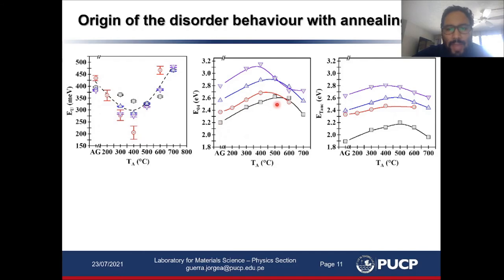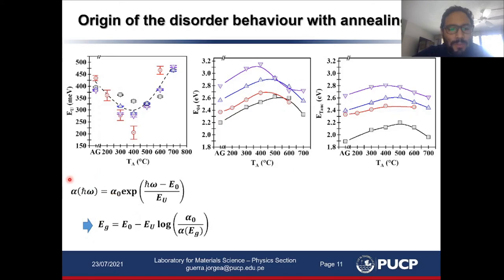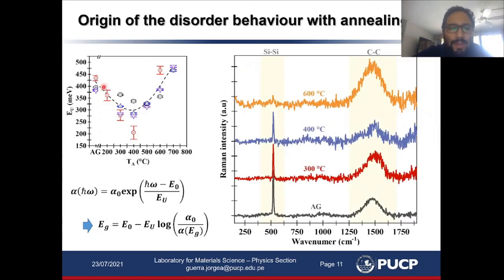Also, the shape of the Tauc bandgap and E04 bandgap curves with annealing temperature is linked to the Urbach energy. As we said at the beginning, Urbach tails bias the determination of the optical bandgap. It is easy to show that if the bandgap falls within the range where the absorption coefficient can be modeled with the Urbach rule — written along with the Urbach focus E0 and alpha_0 — then the optical bandgap determined with either the Tauc plot or the E04 method can be written in terms of the Urbach energy, such that when the Urbach energy increases, the optical bandgap decreases. We also performed Raman measurements, and we see that silicon bonds are quenched more rapidly than carbon-to-carbon bonds, and carbon-carbon bonds are quenched and then increased again.